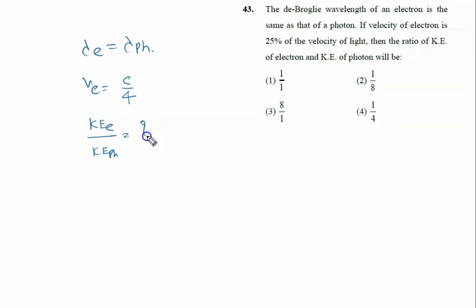We all know very well kinetic energy of the photon is always given by the standard formula, that is hc by lambda. Now we have to calculate the kinetic energy of the electron.